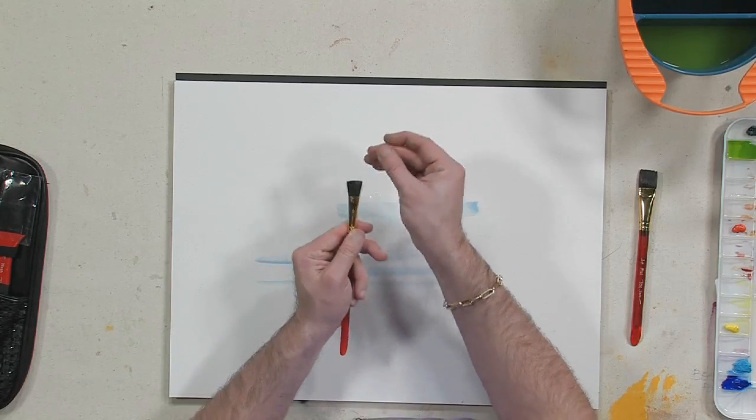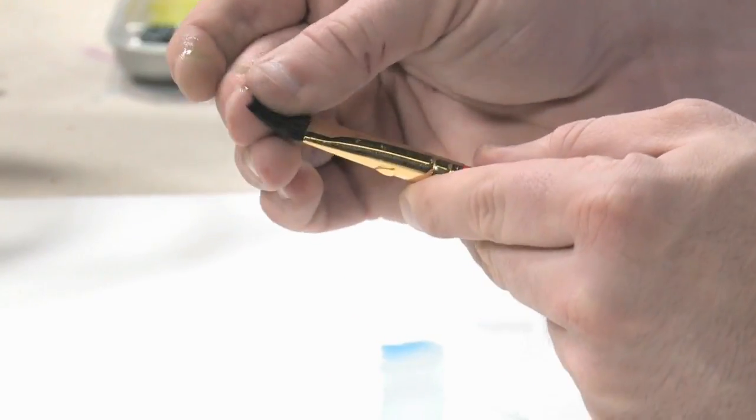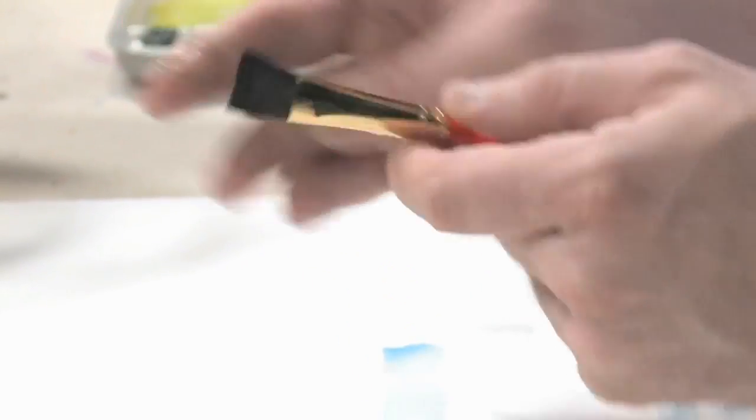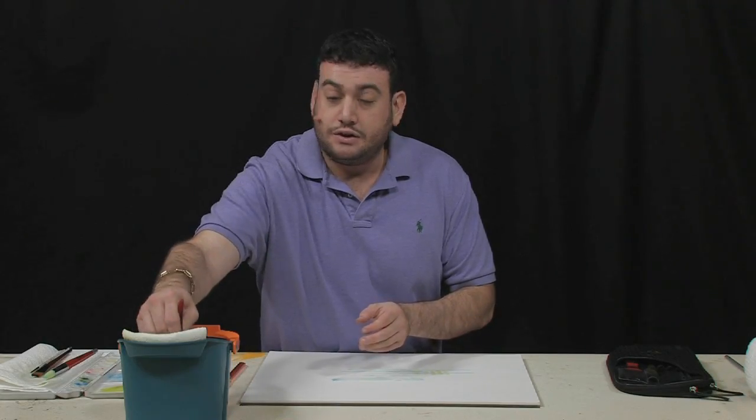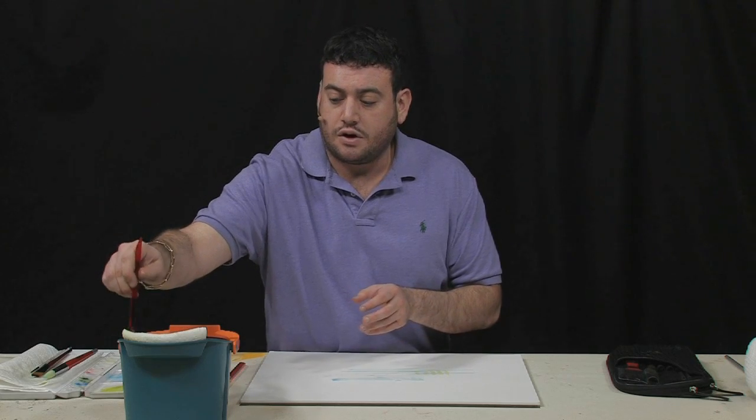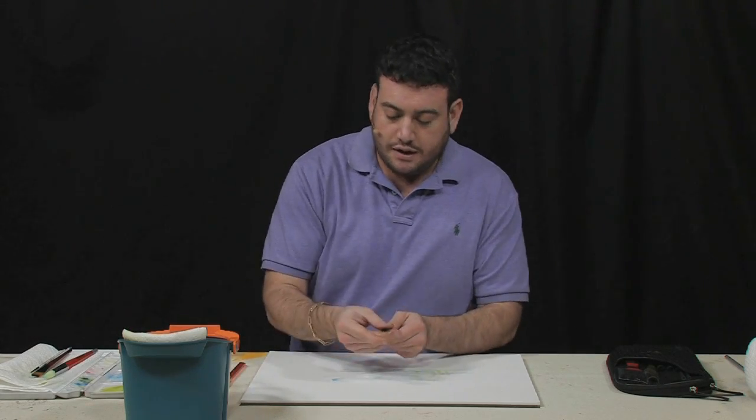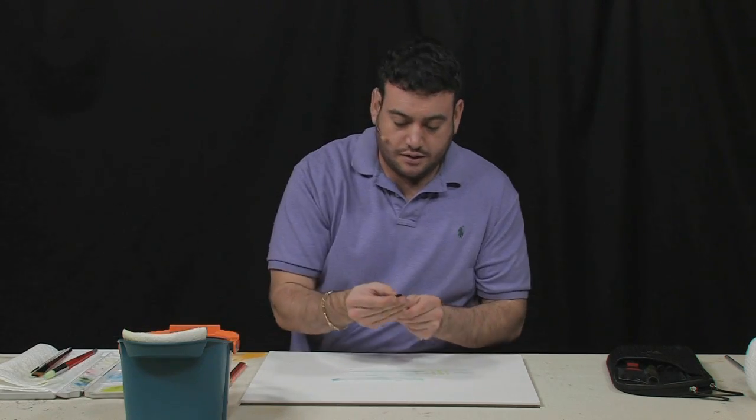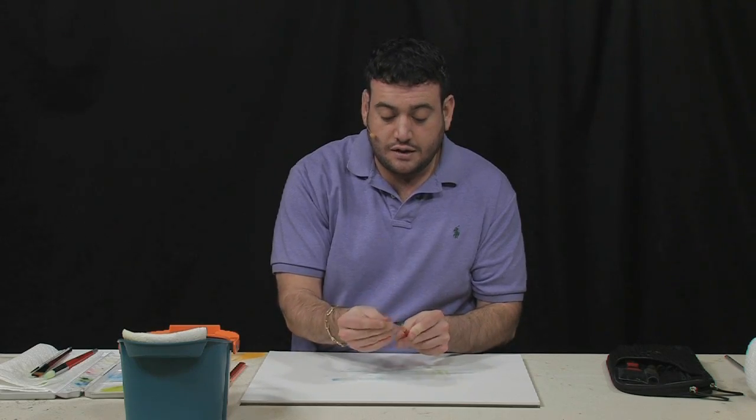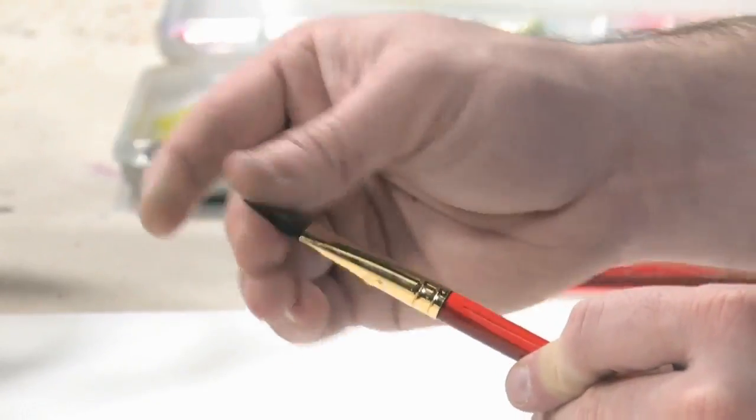So, whenever you get a new brush, just take the time to give it a few minutes there, and then do the process again, re-soak it, because the water will help loosen up anything that's stuck in there, and just work out any loose hairs. That way, the brush is ready to go, and you won't have to worry about that anymore.